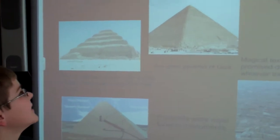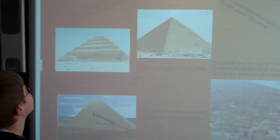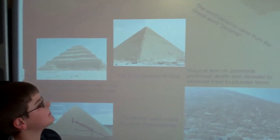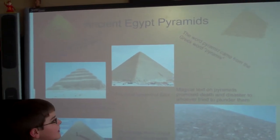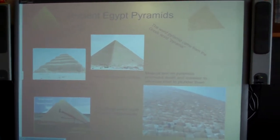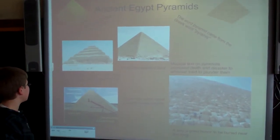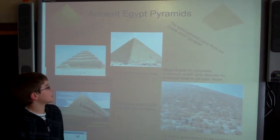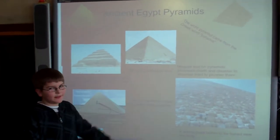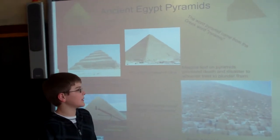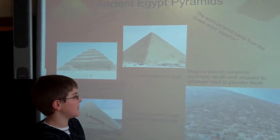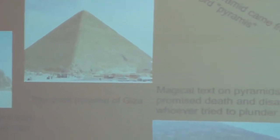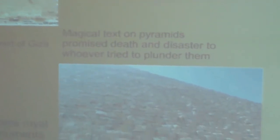Ancient Egypt Pyramids. Pyramids were also known as the House of Eternity. The word pyramid came from the Greek word pyramids. Pharaohs were buried under a step pyramid rather than inside the real pyramid. This is a picture of the Great Pyramid of Giza. Magical text on pyramids promised death and disaster to whoever tried to plunder them. Pyramids were royal funeral homes.